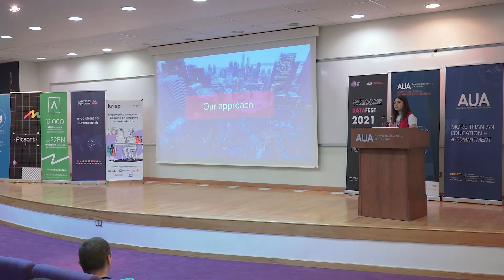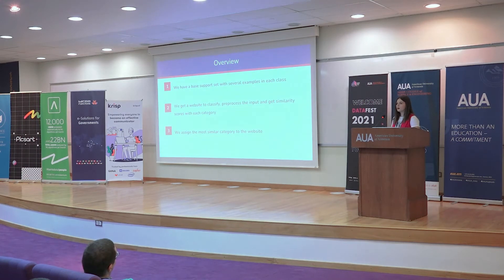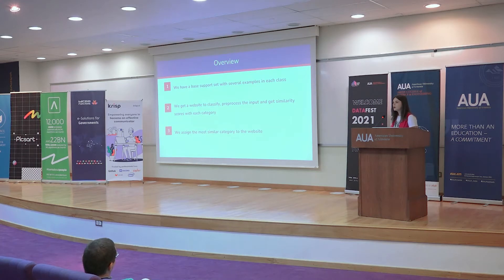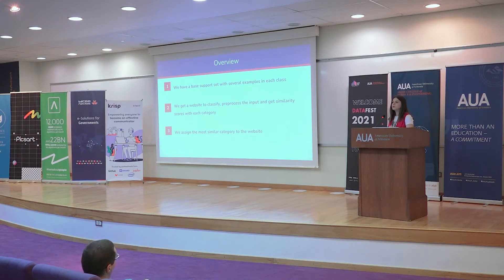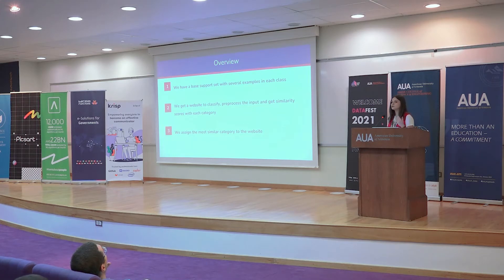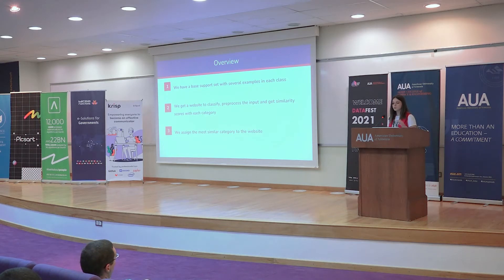Let's first have a high-level image of how our approach works. We have a base support set which contains examples from each category — a limited number, say three or five. Whenever we want to classify a website, we compute a similarity score between the website and each of the categories. Whenever we have the similarity scores for each category, we rank them and assign the top category to the website. This is the overall image of the approach.